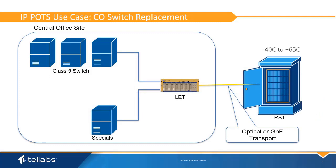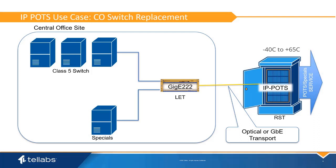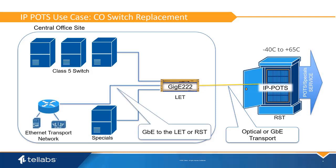Legacy networks prior to upgrading to IP POTS use Class 5 voice switches that provide SS7 and T1 interfaces to deliver POTS services through the T1000 network to the RST. Since the IP POTS card is temperature hardened, it can be placed in an outside plant RST cabinet. The IP POTS card can be used to replace all standard POTS line cards. These circuits are all converted on the IP POTS card to SIP-based VoIP lines, and Ethernet is sent over the backplane to the GigE card. The GigE card transports these VoIP circuits to whatever device is the ingress into the Ethernet transport network, typically an edge router or BNG.